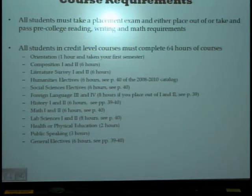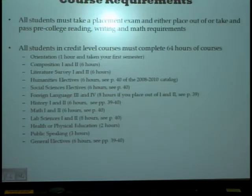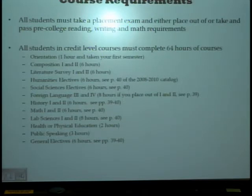You have a foreign language requirement to take care of in this field. If you can place out of the first two course levels — foreign language one and two — then you can go on to three and four and take care of your eight hours. If you take the placement exam for foreign language, whether it's Spanish, French, German, or any other foreign language, and you don't place out, then you need to plan for those extra courses. You'll also take history one and two of your choice, which could include American history, African American history, or Western civilization.